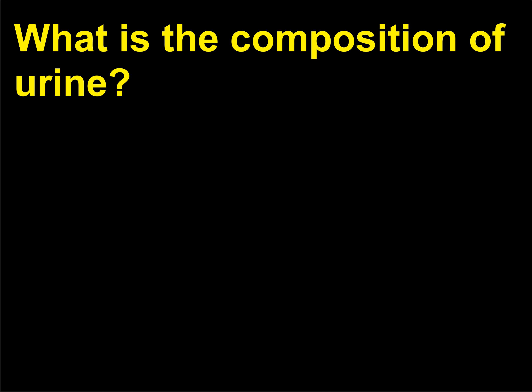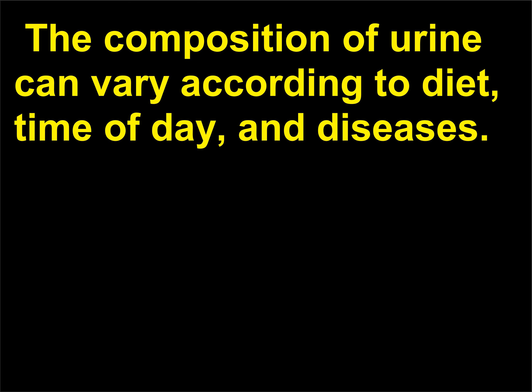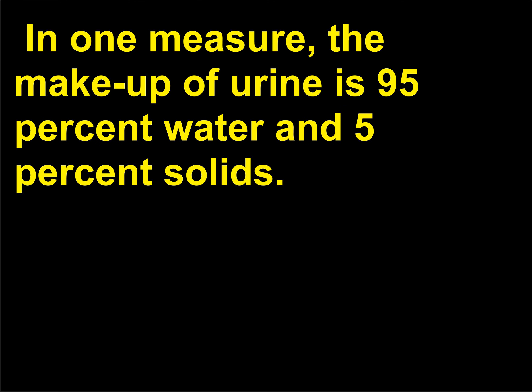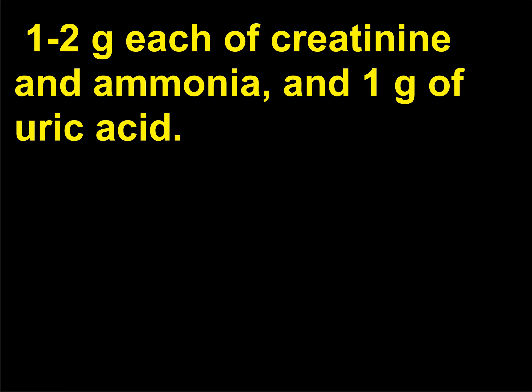What is the composition of urine? Urine is composed mostly of water containing organic wastes as well as some salts. The composition of urine can vary according to diet, time of day, and diseases. In one measure, the makeup of urine is 95% water and 5% solids. In terms of organic wastes per 1500 ml, urine contains 30 g of urea, 1 to 2 g each of creatinine and ammonia, and 1 g of uric acid.